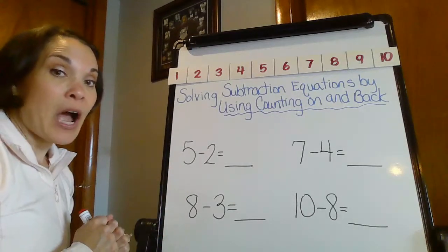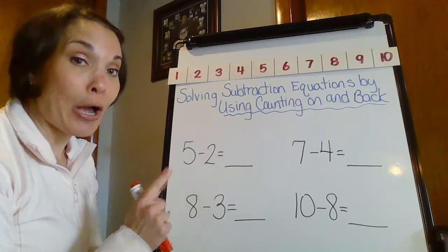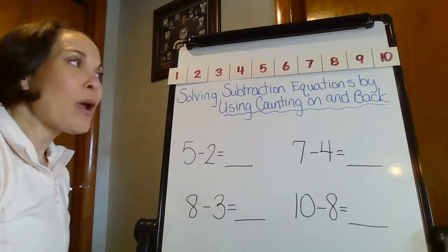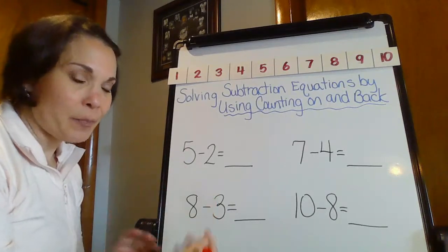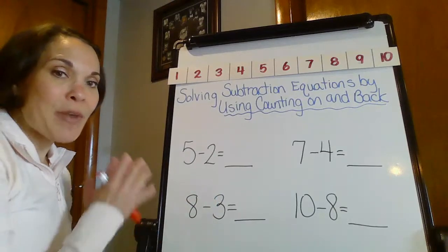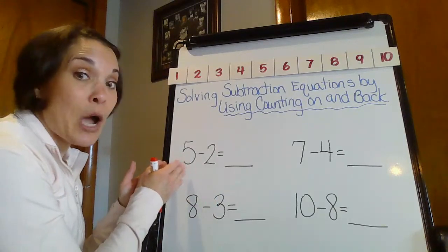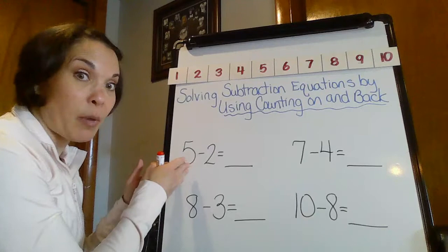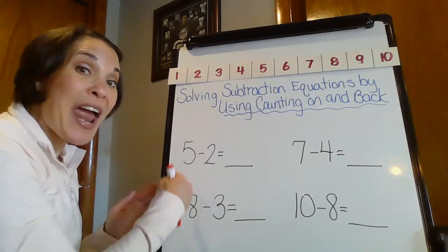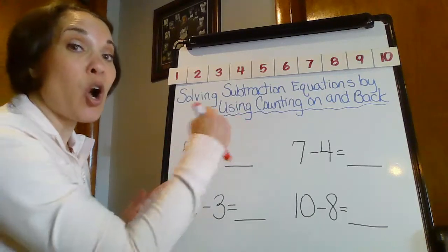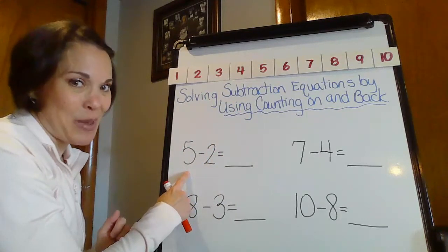Now, I could also count on to do that. So it's going to be the opposite. So what I'm going to do, I'm not necessarily going to be starting with my whole, my big number, I'm going to start with the smaller number and count up, count on to my big number.